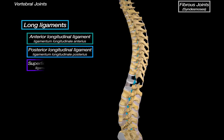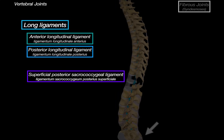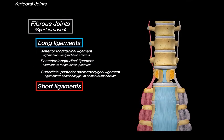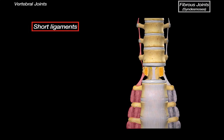Then we have the superficial posterior sacrococcygeal ligament, found at the very end of the spine, attached to the back of the sacrum and coccyx. Those are the long ligaments — the major stabilizers across the whole length of the spine. Now let's move on to the short ligaments.